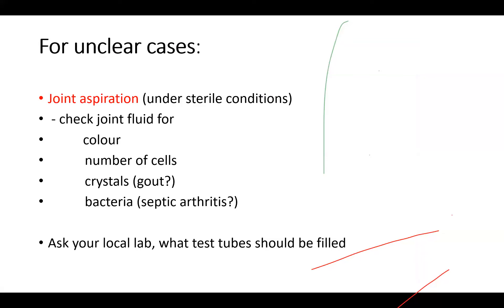If you have unclear cases where you're not sure, you can do joint aspiration under sterile conditions and send in the fluid. You usually check it for color — it's usually a yellowish, white-yellowish color. Send it to the lab: ask for the number of cells, ask for crystals in case it might be gout, and ask for bacteria in case it might be septic arthritis. Ask your local lab what test tubes should be filled — usually the full blood count tube for cell count and a serum tube for the other things.